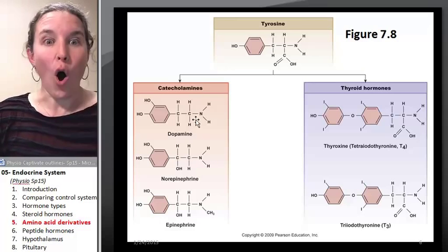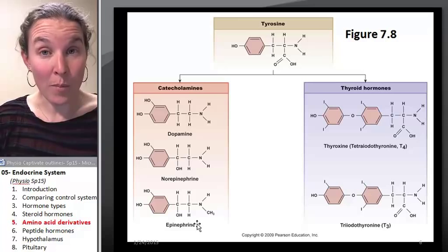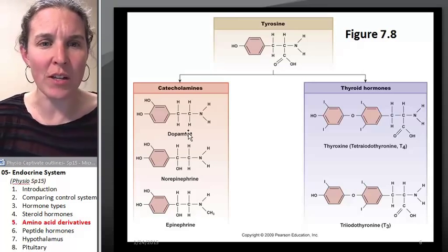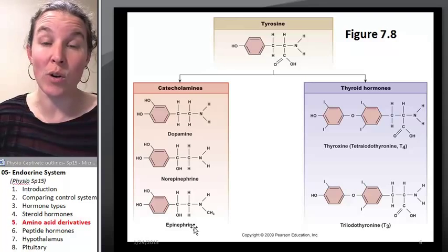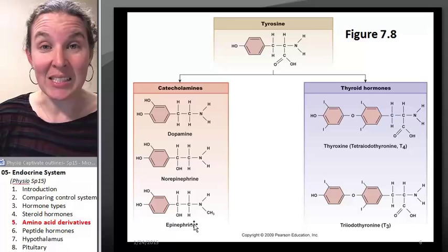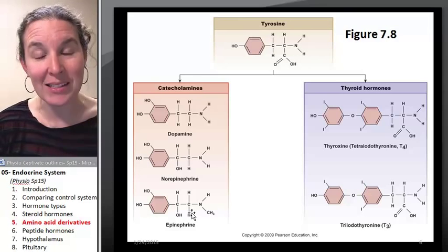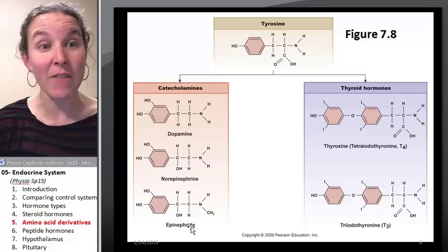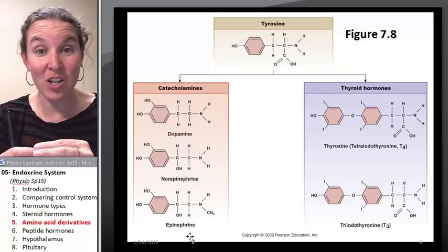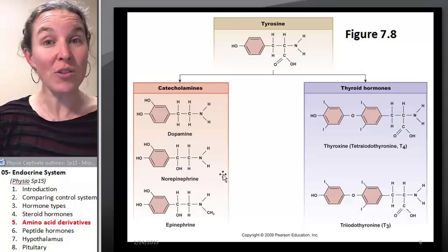All of these can act like hormones because they can be dumped into the blood. Actually, I don't know if that's true about dopamine, but it is true about norepinephrine and epinephrine. If they're dumped into the blood, they act like hormones, but they can also act like neurotransmitters. And if they're transmitted across a synapse to a very specific target, then they're considered neurotransmitters.